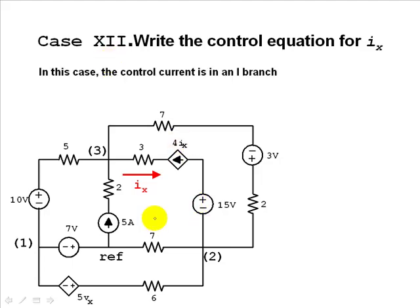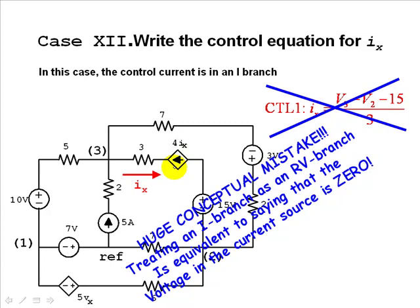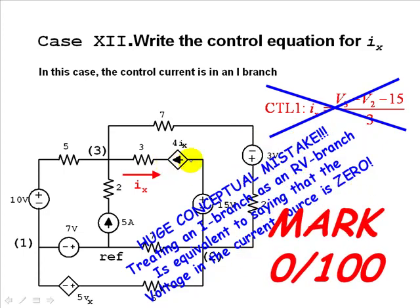Case 12: What if someone wrote the current in this branch as V3 minus V2 minus 15 volts, divided by 3? That would be wrong, because you would be assuming the voltage across the current source is zero — a huge conceptual error. Remember, we cannot assume the voltage across a current source is zero. That formula is valid only on an RV branch, and this branch has a current source in it.